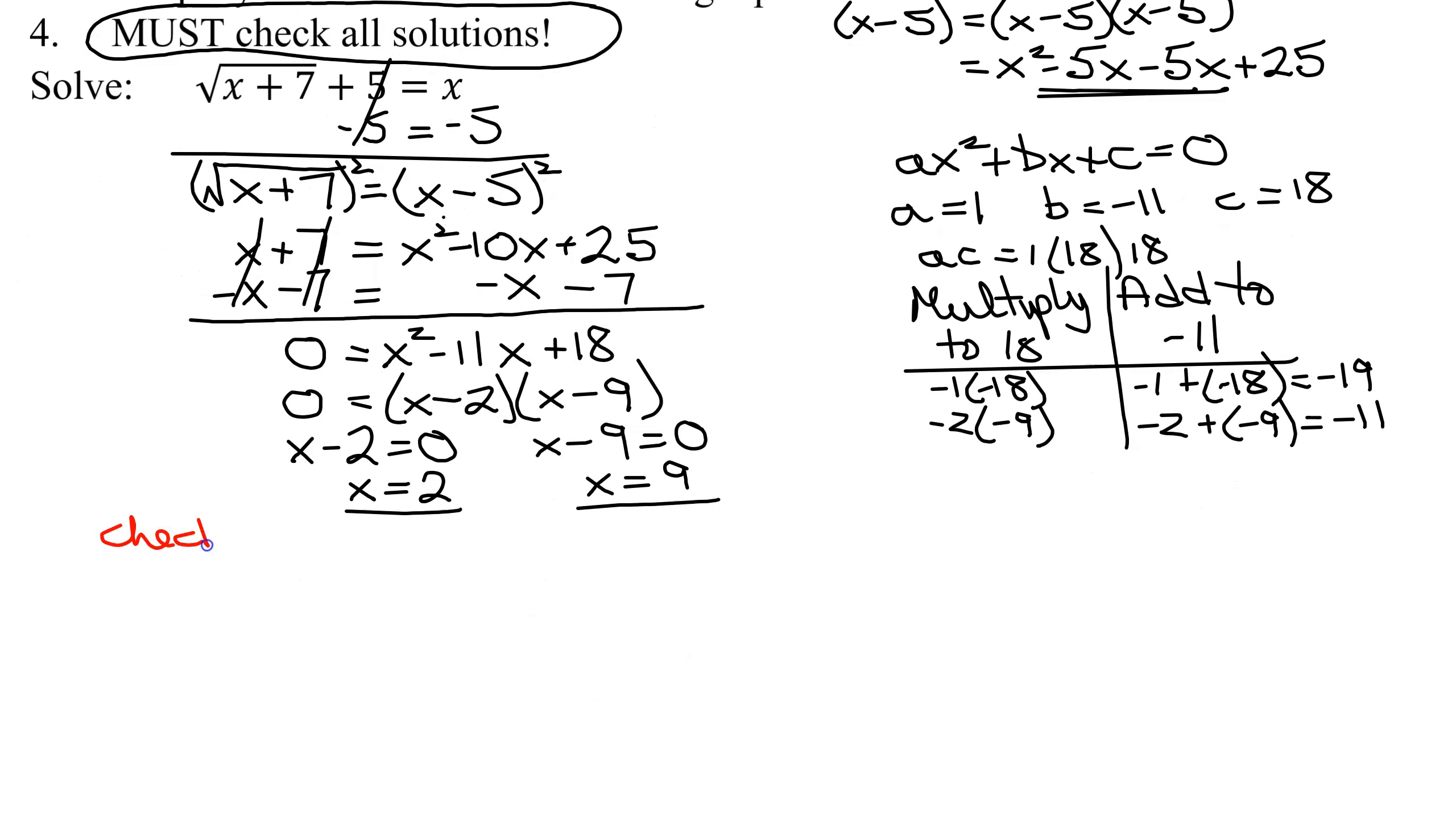So checking initially, x equals 2 in the original equation. So I'm going to get the square root of x, which is 2, plus 7, both of those are under the radical, plus 5 should equal x, which is 2. The square root of 2 plus 7 is 9, plus 5, does it equal 2? The square root of 9 is 3. 3 plus 5, does it equal 2?